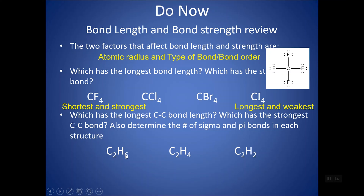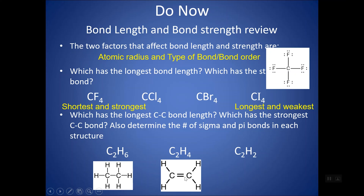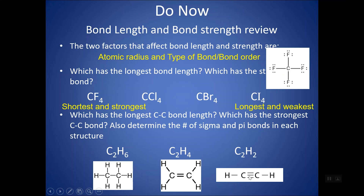C2H6 has all single bonds. C2H4 has a double bond in the center. And C2H2 has a triple bond. So here we're considering all the same radii — all carbon-carbon bonds — but changing the type of bond. The triple bond would have the shortest bond length and be the strongest bond, hardest to break. The single bond would be the longest and the weakest.